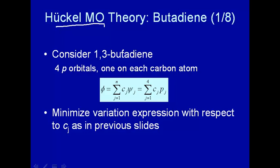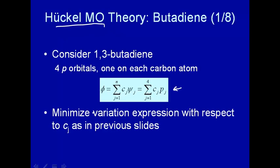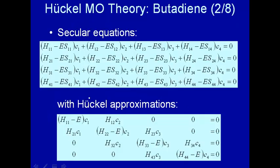Recall that in Huckel molecular orbital theory, your basis set consists of the atomic carbon P orbitals — so we have four orbitals, four atomic orbitals in our basis set. What we want to do is minimize the variation of energy with respect to the parameters, getting an expression for energy. We've done that, and what we get are the secular equations. Since we have four basis set functions, we're going to get four secular equations, all equal to zero. With the Huckel approximation, a lot of these terms go to zero.